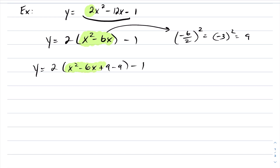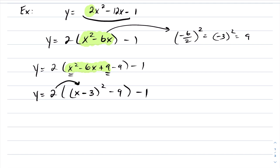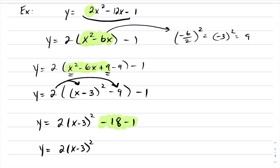Like it's always been the case, these first three terms will always be a perfect square. We write down our 2, and we're going to have a perfect square here. Notice I write back down everything else — my minus 9, my brackets, my minus 1. These three terms factor into a perfect square: the square root of x squared is x, the square root of 9 is 3, and you copy the sign in front, which is negative. Now I want to collect like terms — I distribute that 2 to both the perfect square and my negative 9. This gives me 2 times x minus 3 quantity squared minus 18 minus 1. Collecting constant terms, we get y equals 2 times x minus 3 quantity squared minus 19.